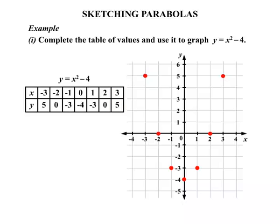So all our points are plotted. We then draw as best we can a curve. There's no straight lines there. It's a curve. And we then label the equation, y = x² - 4.